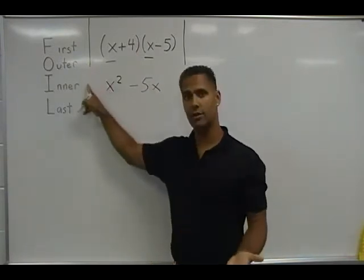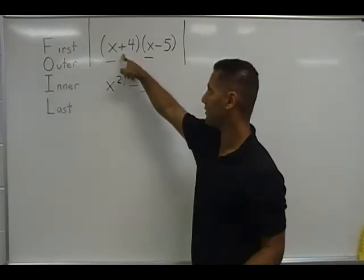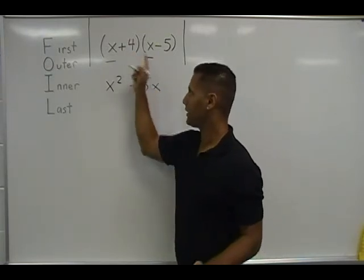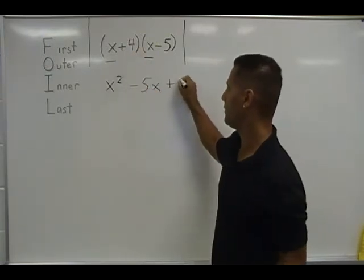Now we are going to move on to the inner terms. The inner terms are positive 4 and positive x. And the product of those two terms are positive 4x.